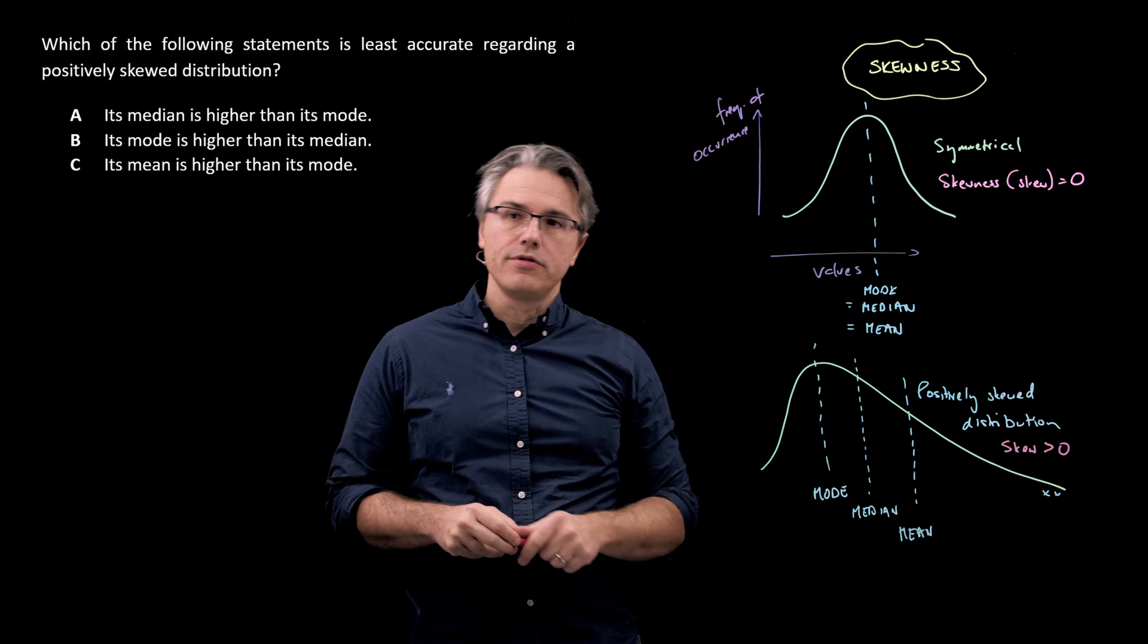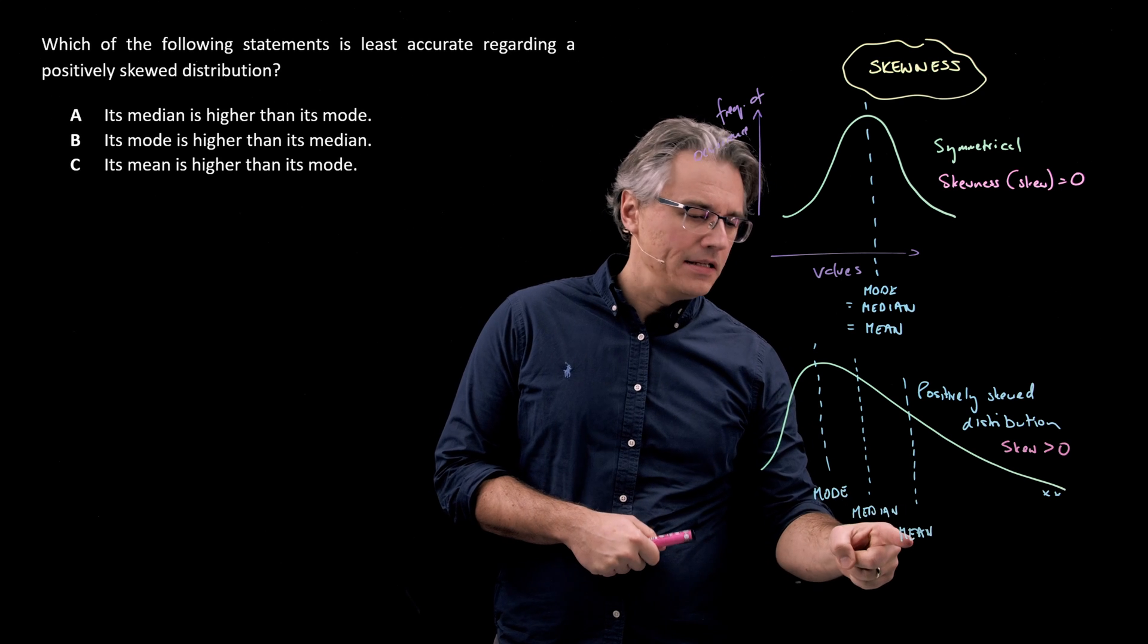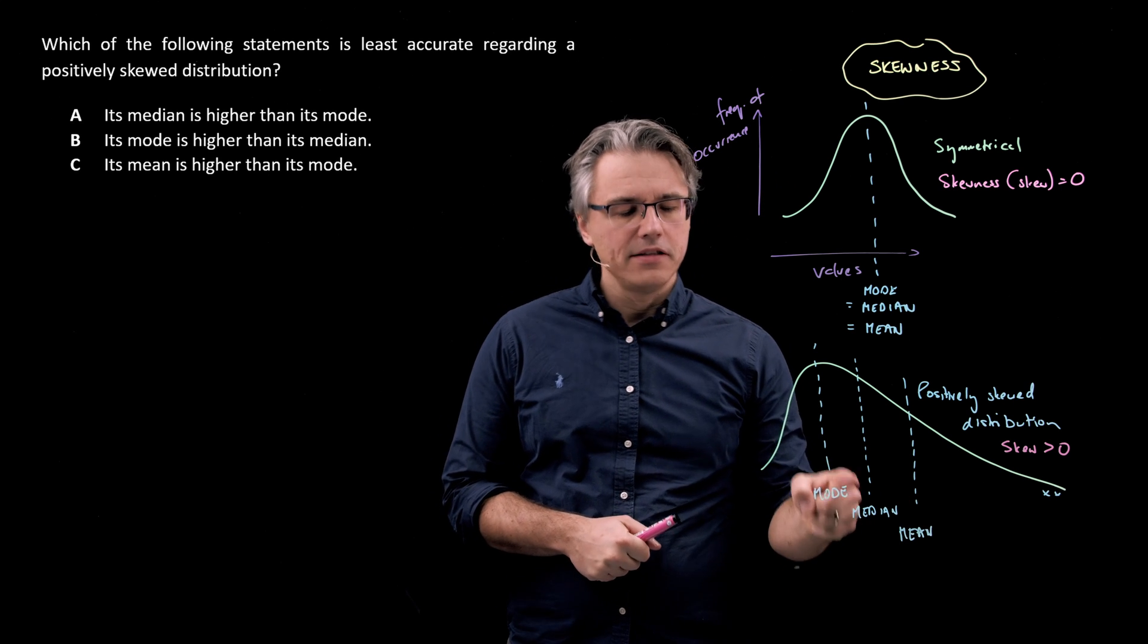It's zero if the distribution is symmetrical. The mean is going to be higher than the median, and the median is going to be higher than the mode.